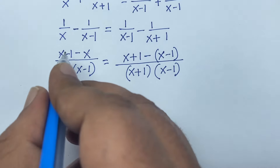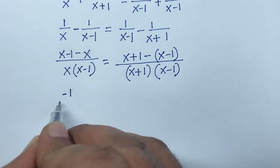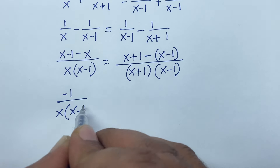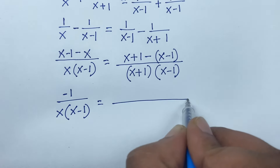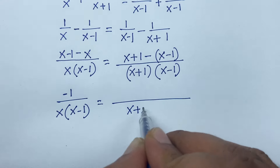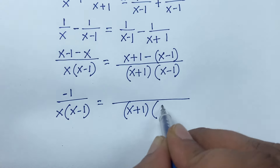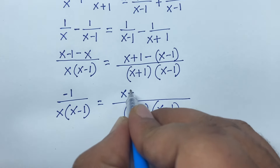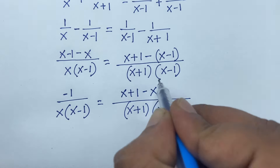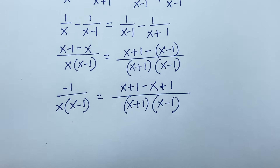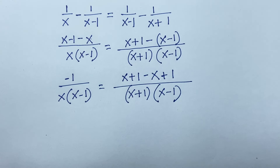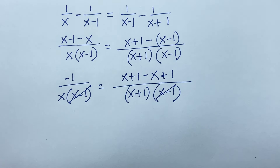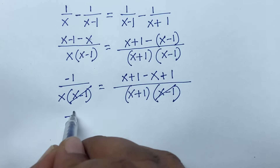Here the x terms cancel, and we get minus 1 over x times x minus 1. On the right side, x plus 1 minus x minus 1: the x's cancel and minus 1 minus minus 1 becomes plus 1, giving us 2. So we have: minus 1 over x times x minus 1 equals 2 over x minus 1 times x plus 1.